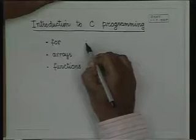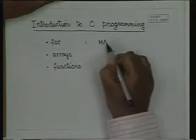We shall continue our study of C programming language. In the previous lecture we saw how to write simple programs to print variables, read variables, write assignment statements, and we also saw the if-then-else construct. We shall next see the for loop, the looping statement, and for this we will solve the example from the first class: finding out the maximum of n numbers.